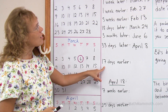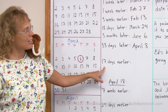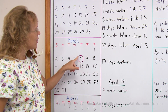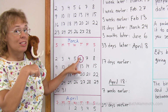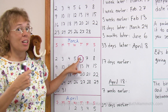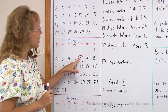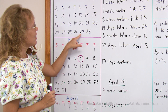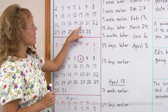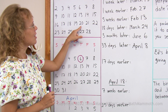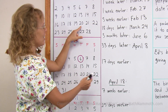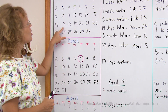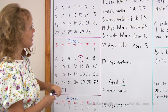17 days earlier than March 6th. We're here. I can count backwards 17 days, but it's quicker to count by sevens, by whole weeks. So seven days earlier is exactly here, and then another seven days — 14 days earlier — is this. And then I go backwards three more days: 15, 16, 17. So that is February 17th.